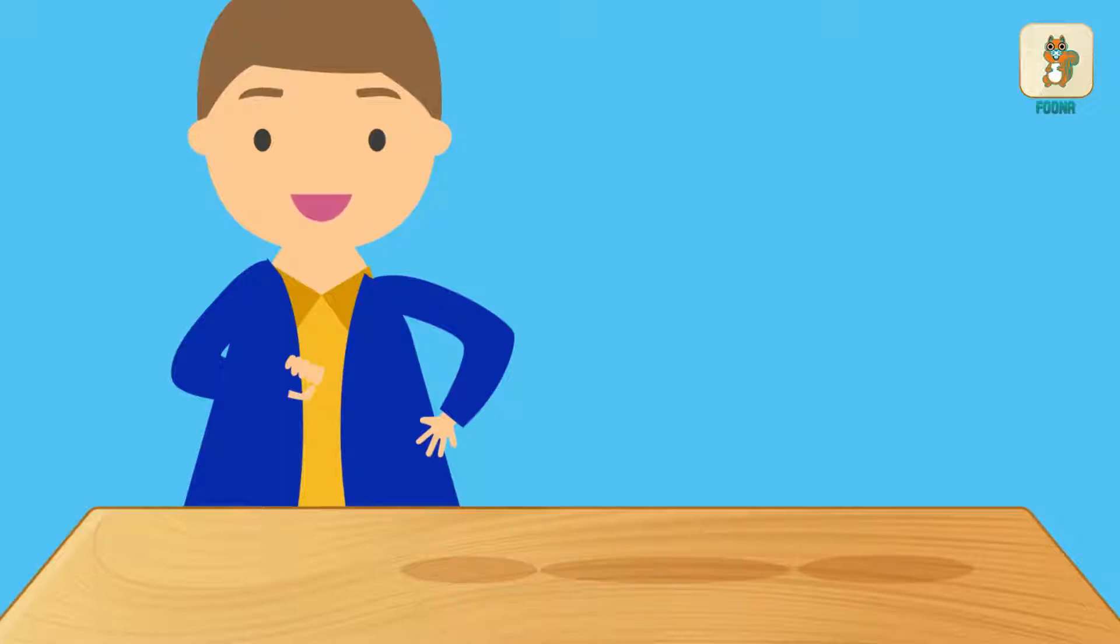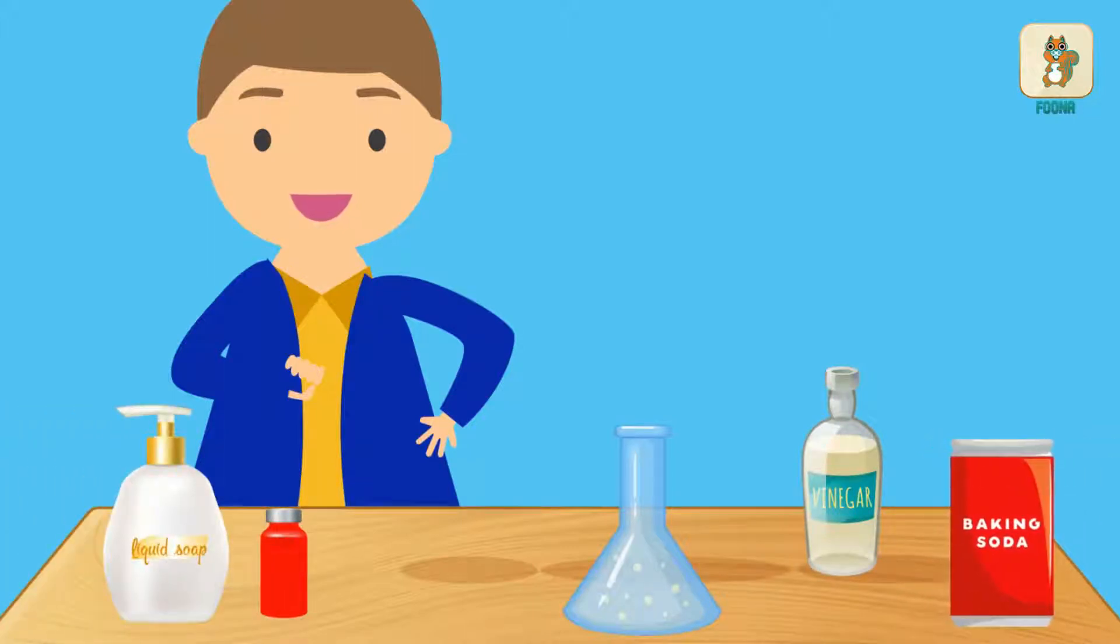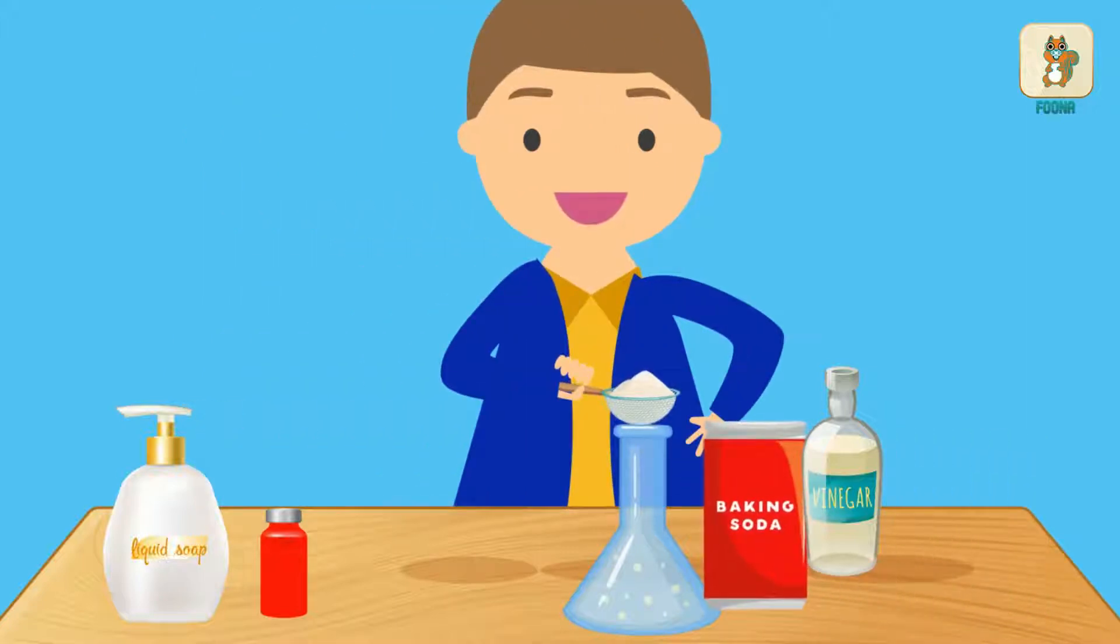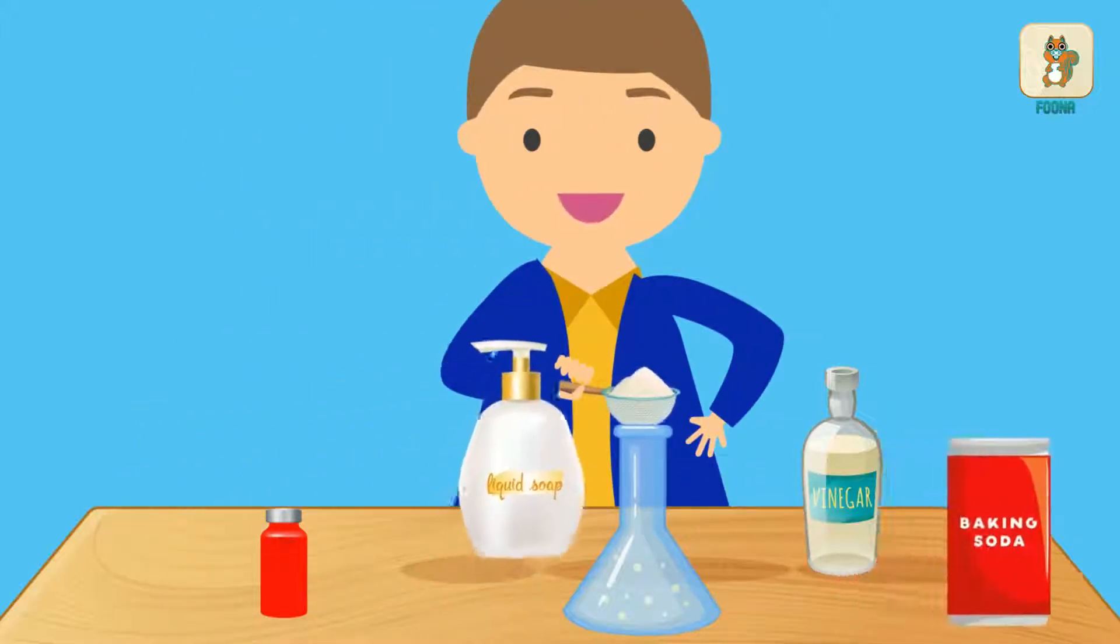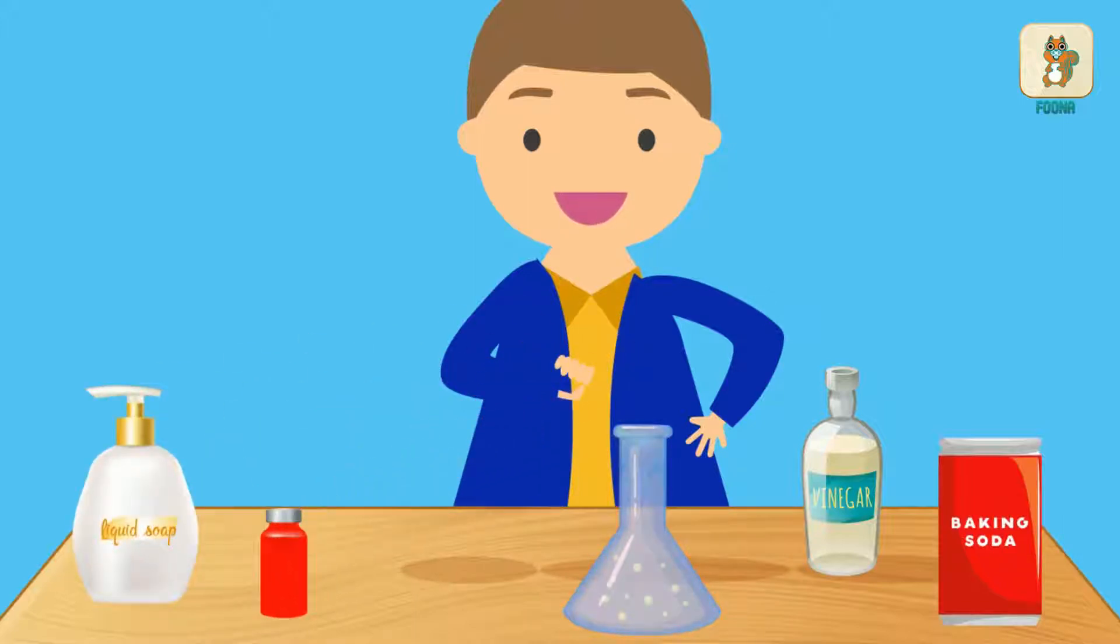All you need is a glass jar or a bottle, vinegar, baking soda, liquid colour, and dishwashing liquid soap. Add 2 spoons of baking soda, a spoonful of dish soap, and the colour to the bottle.